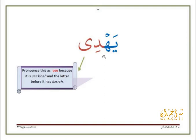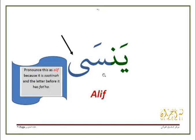In this example, the يَ also has no diacritical marks, so we look at the letter before it. It has a فَتْحَة. Therefore, this يَ is called الألف المقصورة and is pronounced as an alif. This syllable is pronounced سَ: يَنْسَى.